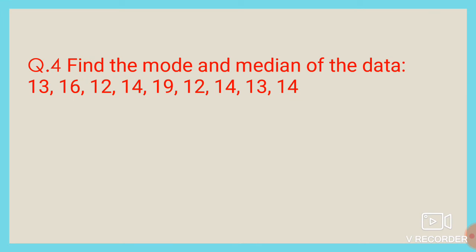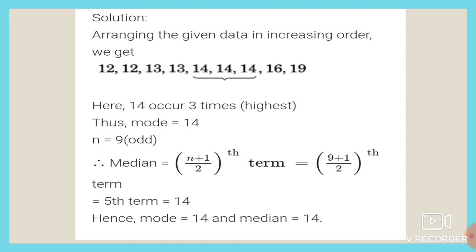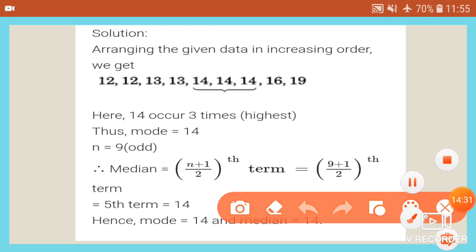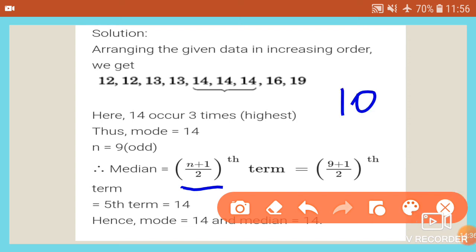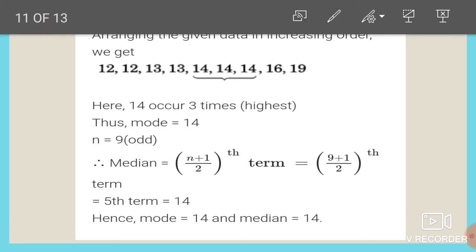Question number 4: find the mode and median of the data. Arranging in ascending order: 12, 12, 13, 13, 14, 14, 14, 16, 19. Here 14 appears 3 times — the most frequent — so mode = 14. With n = 9, median formula gives (9+1)/2 = 5th term = 14. Both mode and median are 14.